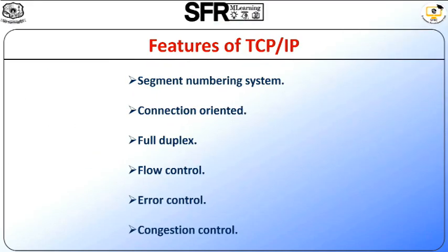Next we will see the features of TCP/IP. The first feature is segment numbering system. TCP keeps track of the segments being transmitted or received by assigning numbers to each one. A specific byte number is assigned to data bytes to be transferred, while segments are assigned sequence numbers, and acknowledgement numbers are assigned to received segments. The next feature is connection-oriented, meaning sender and receiver are connected to each other till the completion of the process, and the order of the data is maintained — the order remains the same before and after transmission. The next feature is full duplex: data can be transmitted from receiver to sender at the same time, which increases the efficiency of data flow between sender and receiver.